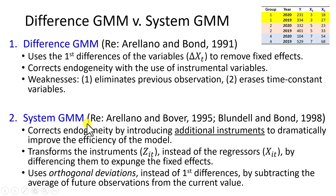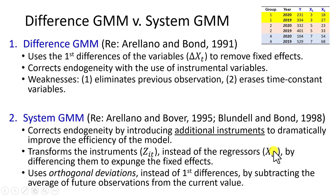System GMM, credited to Arellano and Bond 1995 with methodological improvements in 1998 by Blundell and Bond, corrects endogeneity by introducing additional instruments to dramatically improve the efficiency of the model. It transforms the instruments rather than the regressors by differencing the instruments to get rid of the fixed effects, and chooses orthogonal deviations instead of first differences by subtracting the average of future observations from the current value.